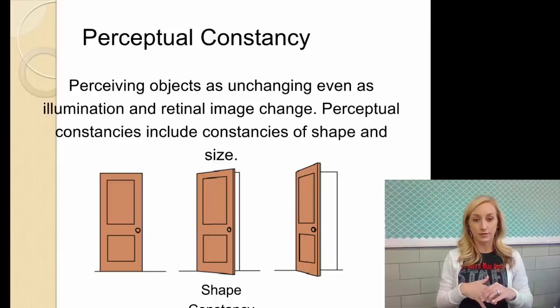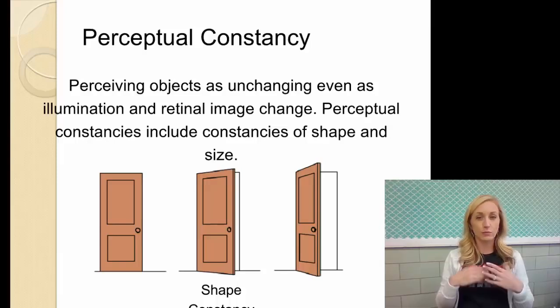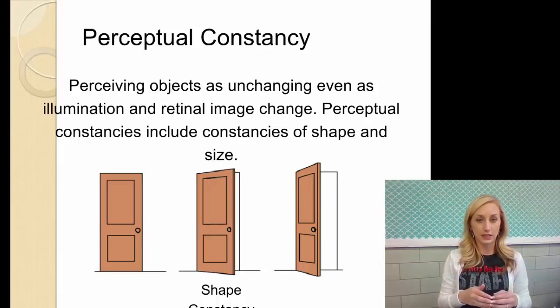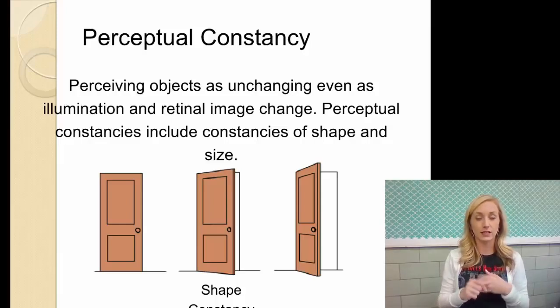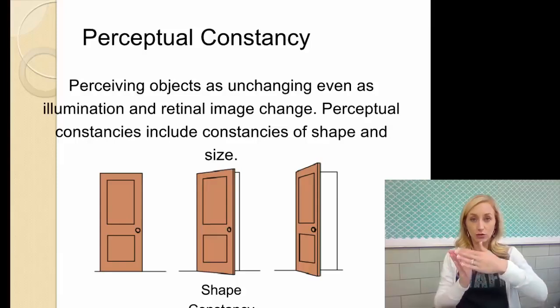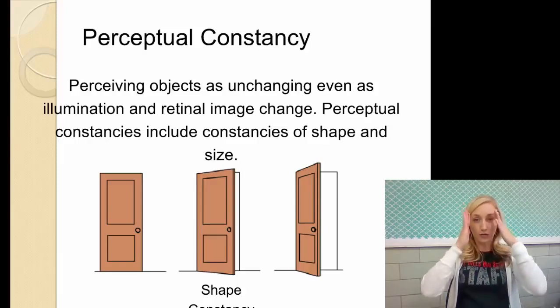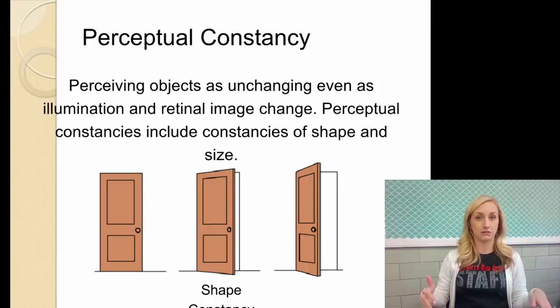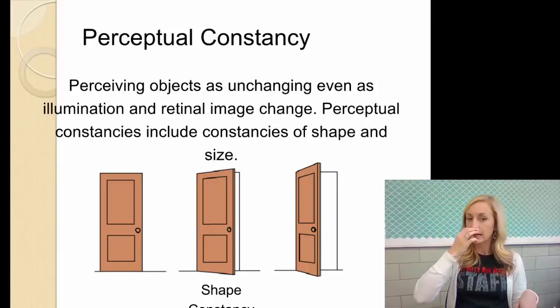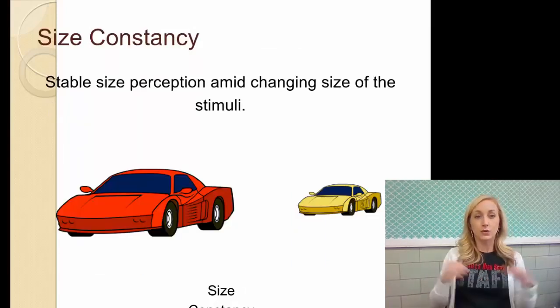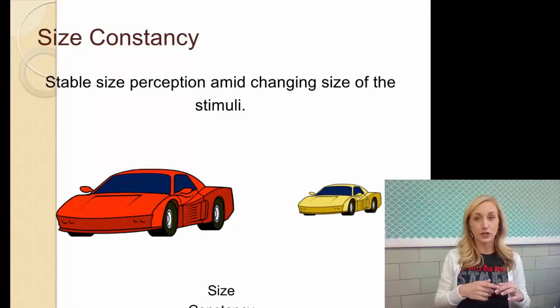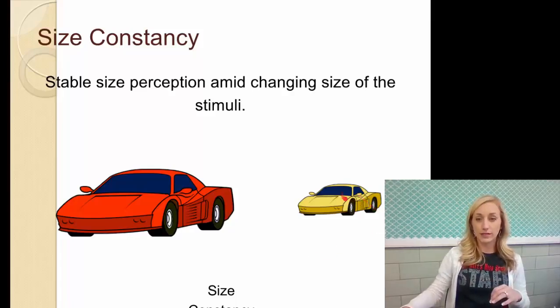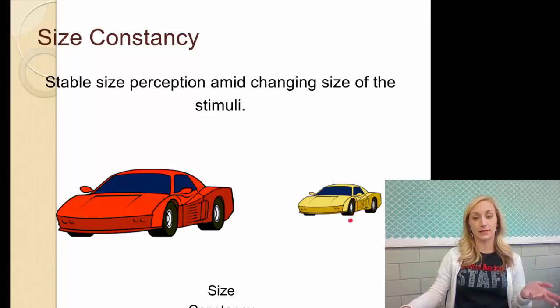All right, perceptual constancy, and we have a few of these, like shape and size constancy. Perceiving objects as unchanging, even as illumination and retinal image change, we perceive them as unchanging. So perceptual constancies include constancies of shape and size. For instance, this door, we know that as a door closes and opens, although on our retinas the image changes, we know that the door remains the same shape and the same size. We know that it's the rectangle and it's the same size, even though the retinal image has changed. So with size constancy, again, stable size perception amid changing size of the stimuli, and that this car, we see, it's farther away. We know it's the same size, though.